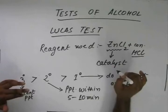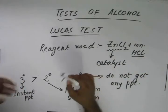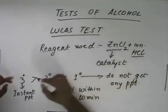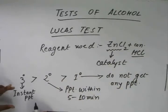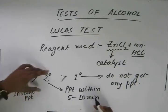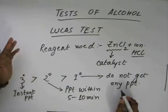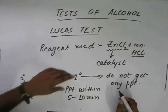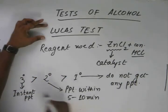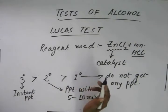So Lucas test is a very elegant test used to distinguish between 3°, 2°, and 1° alcohols. The reagents used are ZnCl₂ and HCl. ZnCl₂ acts as the catalyst. As soon as we add this reagent to a 3° alcohol, we get instant precipitation. If the PPT is obtained within 5 to 10 minutes, it is a 2° alcohol. If no PPT is obtained, it is a 1° alcohol.